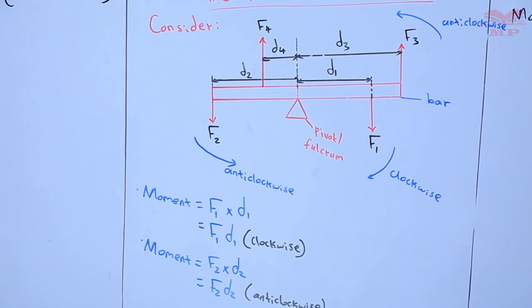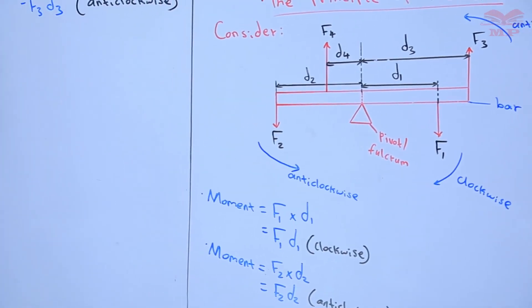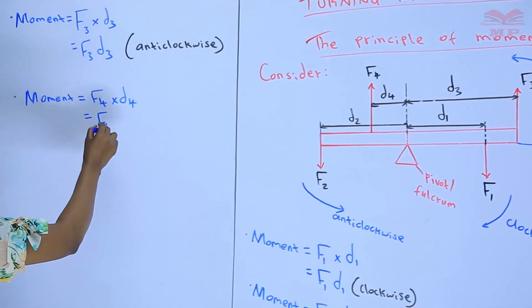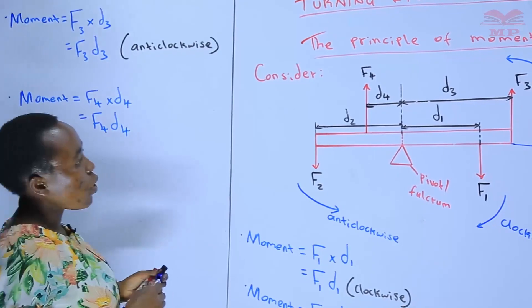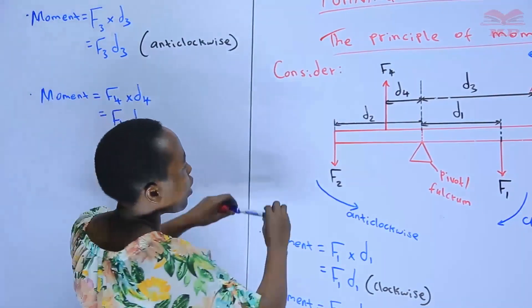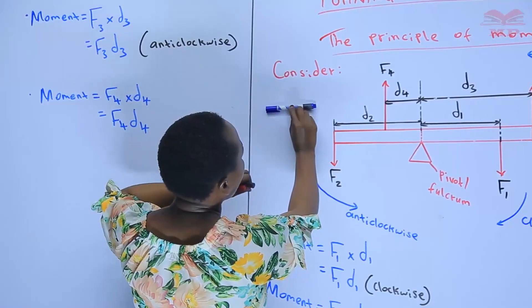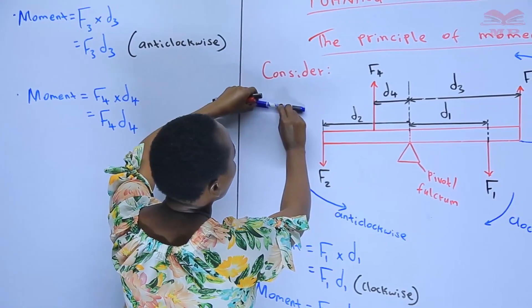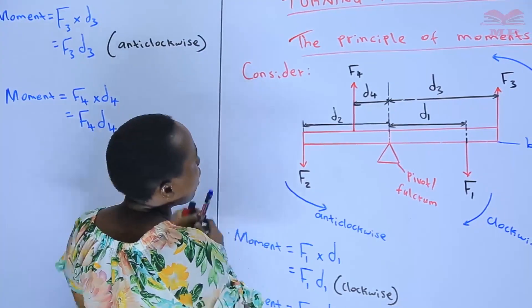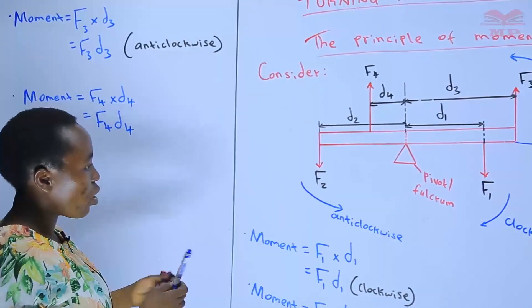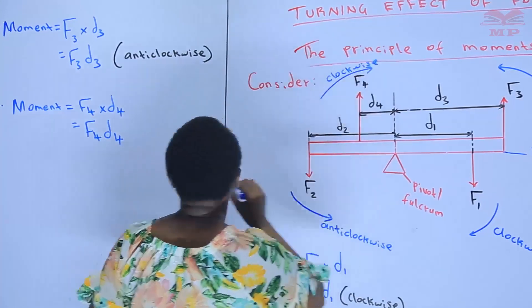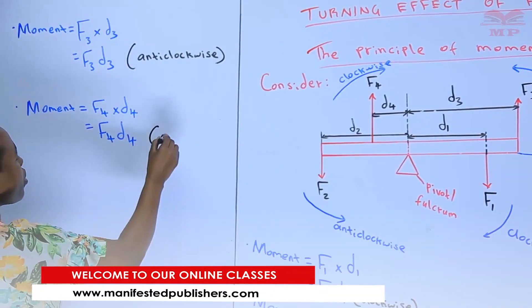Finally, we can add another upward force on the other side. We can call it F4, with distance D4. The moment is given by F4×D4. When we consider the pivot and apply this force in the upward direction on that side, the bar turns in the clockwise direction. So this moment F4×D4 is clockwise.